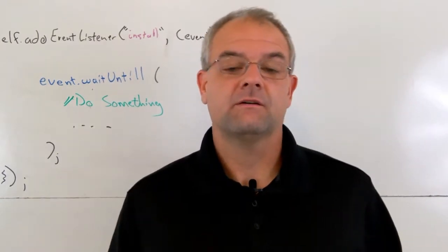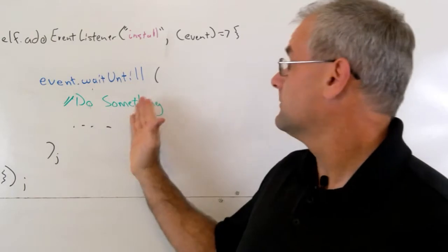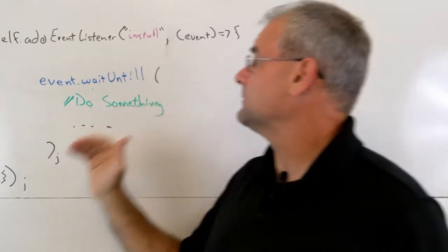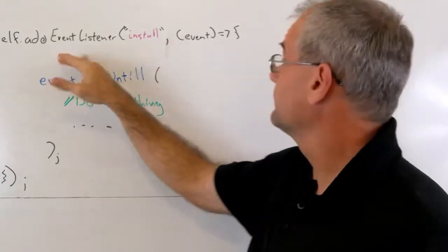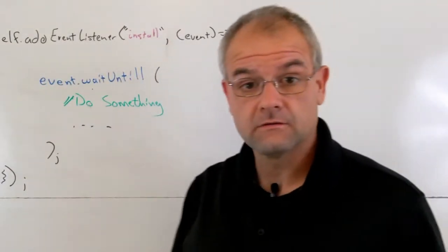Okay, so basically what we're going to do in this particular code example is we're going to call self.addEventListener, and then we're going to say install, and that's going to be the event we're going to bind a handler to.